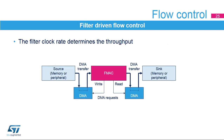This slide describes the filter-driven flow control sequence. The filter clock rate determines the throughput. An input channel DMA request or interrupt is generated whenever the input buffer is not full. The DMA or CPU transfers data into the input buffer from memory or another peripheral. As long as data is available in the input buffer, the filter generates new output samples. When the output buffer is not empty, an output channel DMA request or interrupt is generated, and the DMA or CPU transfers data from the output buffer to memory or another peripheral.